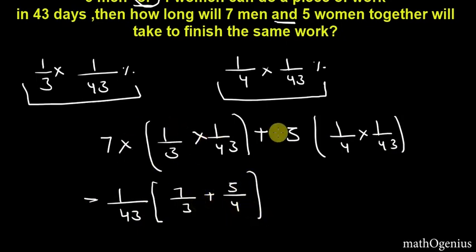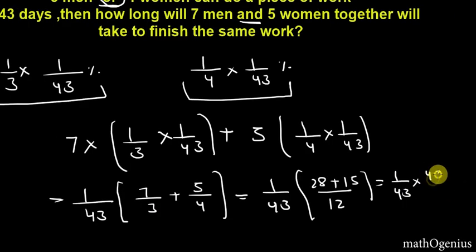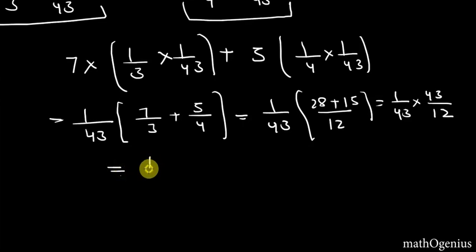Now solving this we will get 1 by 43, and in brackets it's 7 by 3 plus 5 by 4. You can simply open the brackets and solve this, but this is a simpler way. So now simply taking LCM, 4 into 3 is 12, that is 28 plus 15. And it's 1 by 43 into 43 by 12, so it's giving us 1 by 12.